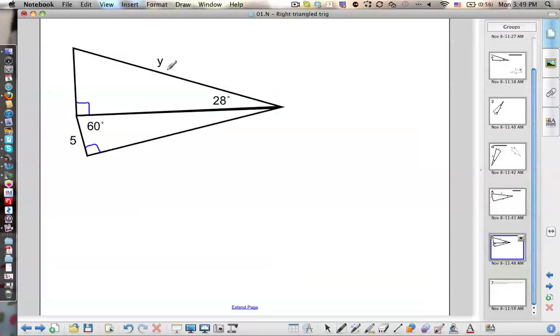Okay, so I want to find out what y is. I'm only given this one side of 5. Of course, I think it makes sense to find this side first because then I'll have a side that is contained on the actual triangle that I want.